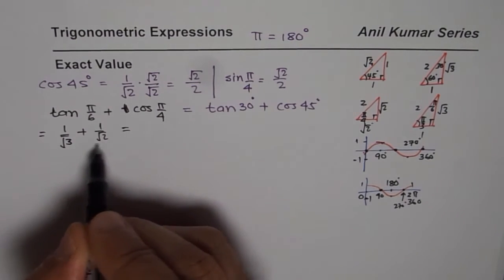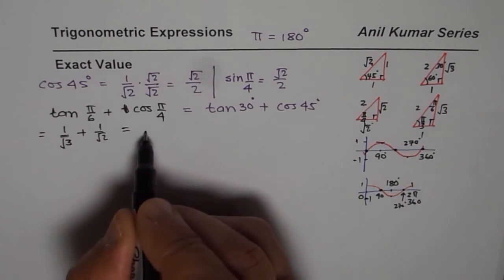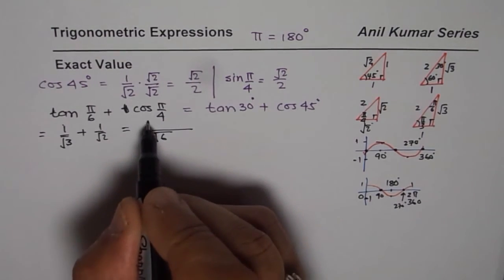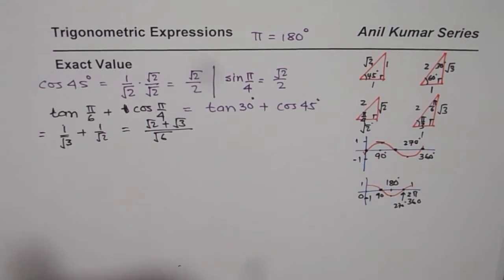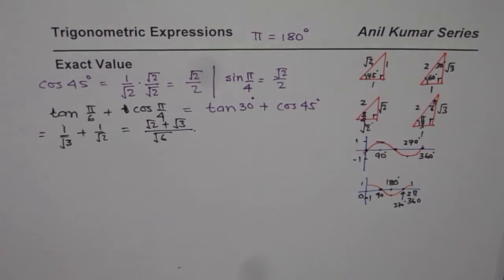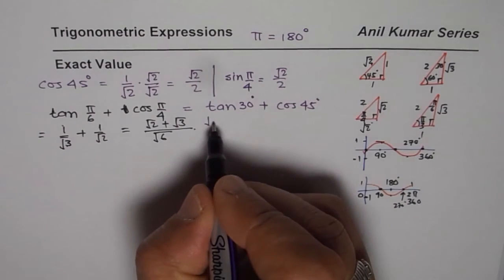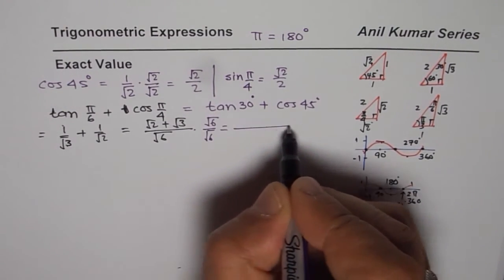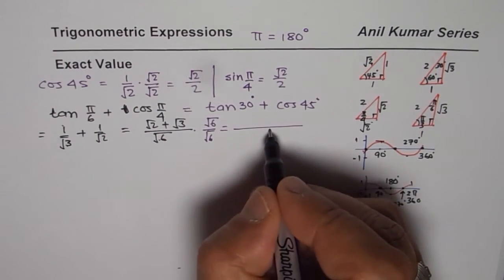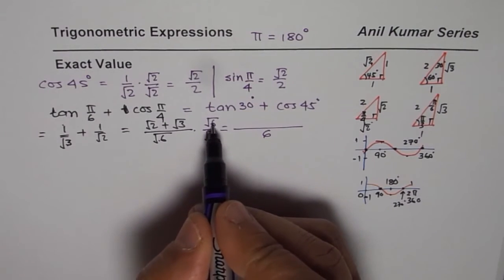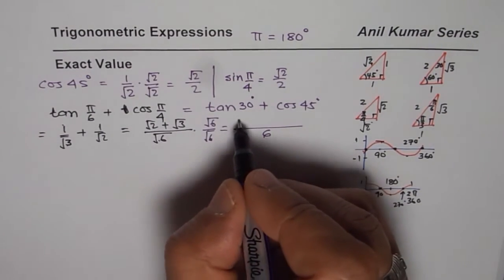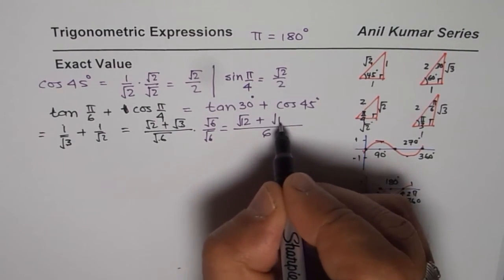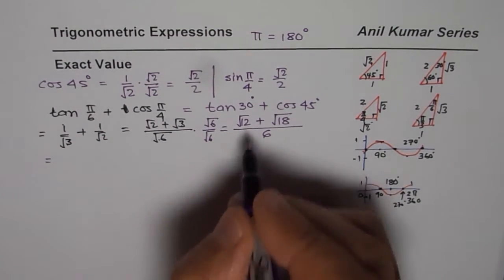Now, you need to add them up. So, common denominator is multiplying these two. Square root 6. And then you get square root 2 plus square root 3. As I said, you need to rationalize. That means, got to multiply this by square root 6 over square root 6. Now, that gives you what? Square root 6 times square root 6 is the number 6. Here, you will multiply square root 6 by 2. We get square root 12 plus square root 18.